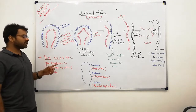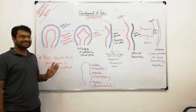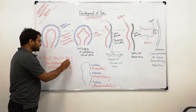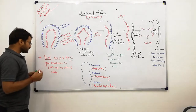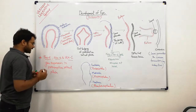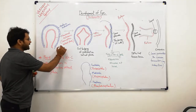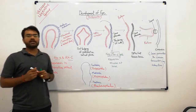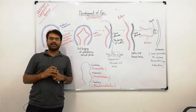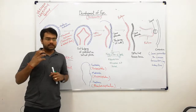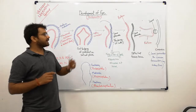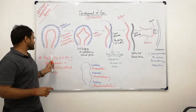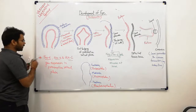There are three important genes expressed in the presumptive retinal plate: PAX6, SIX3, and RK1. These genes are expressed in the presumptive retinal plate and are important for whole eye development — including the structures that will become cornea, retina, and lens. PAX6 gene is especially important.